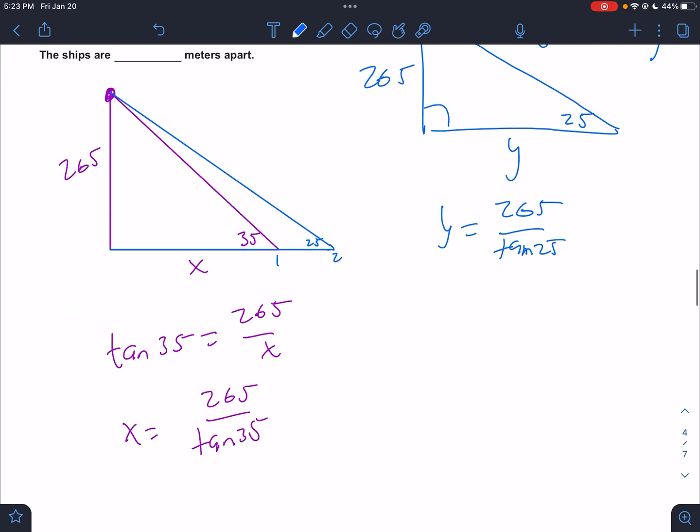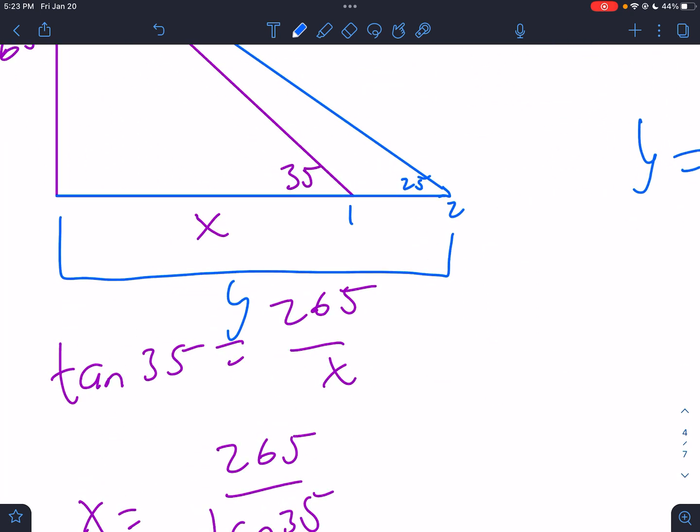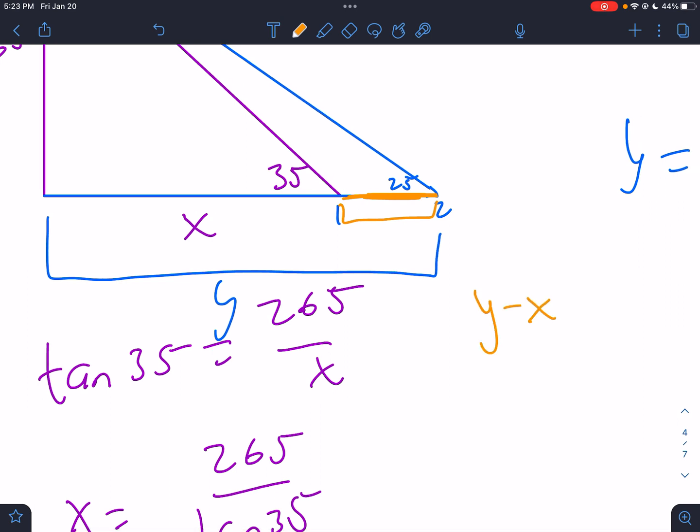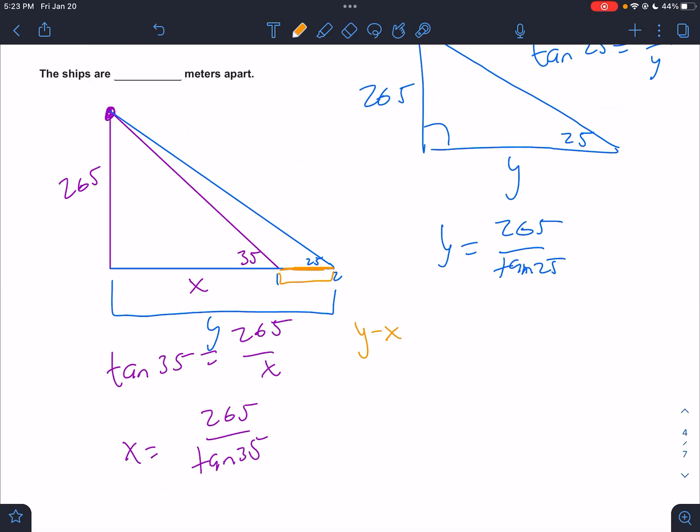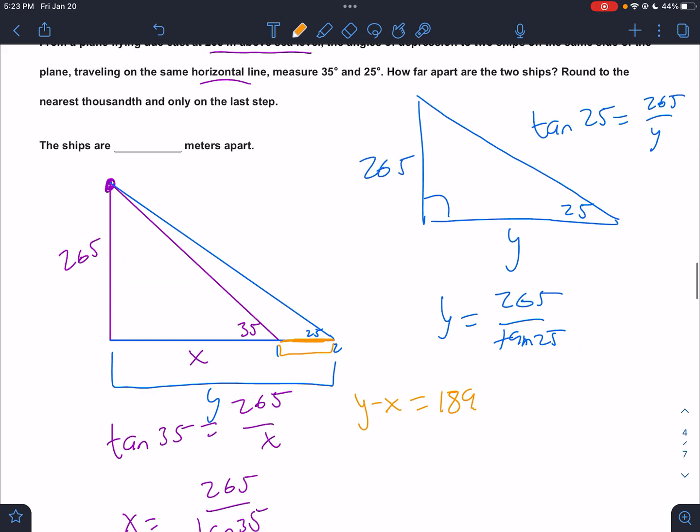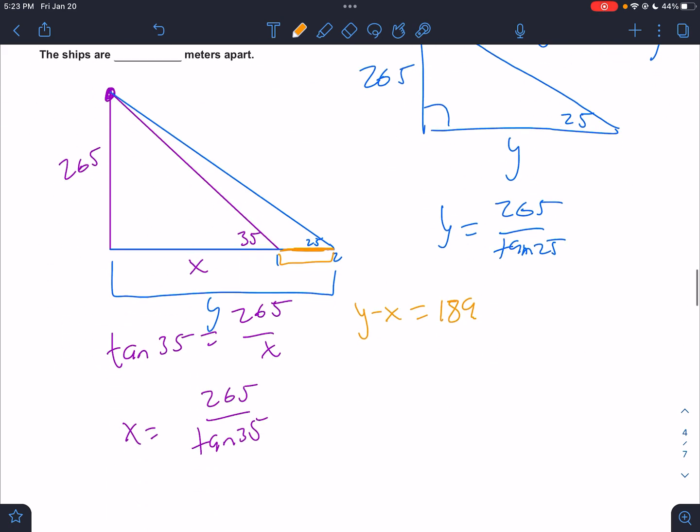So the final answer, right, if this whole thing is Y, and what we want is the distance between the ships, we want this distance, we would have to do Y minus X. So in my calculator, I'm going to do Y minus X. That's 265 over tan 25 minus 265 over tan 35. And I get 189. And what does it say to round to? Round to the nearest thousandths. 189.835. There we go.